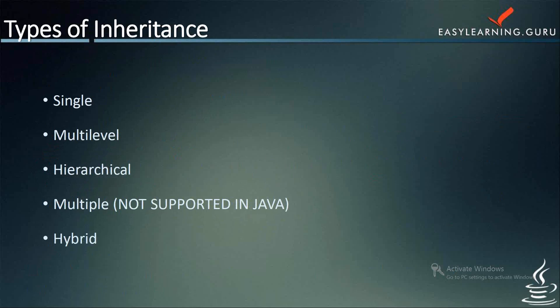Multiple and hybrid inheritance are not supported in Java. When a class extends multiple classes, it is known as multiple inheritance in Java programming. As mentioned, multiple and hybrid inheritance are not supported and are supported only through interfaces.